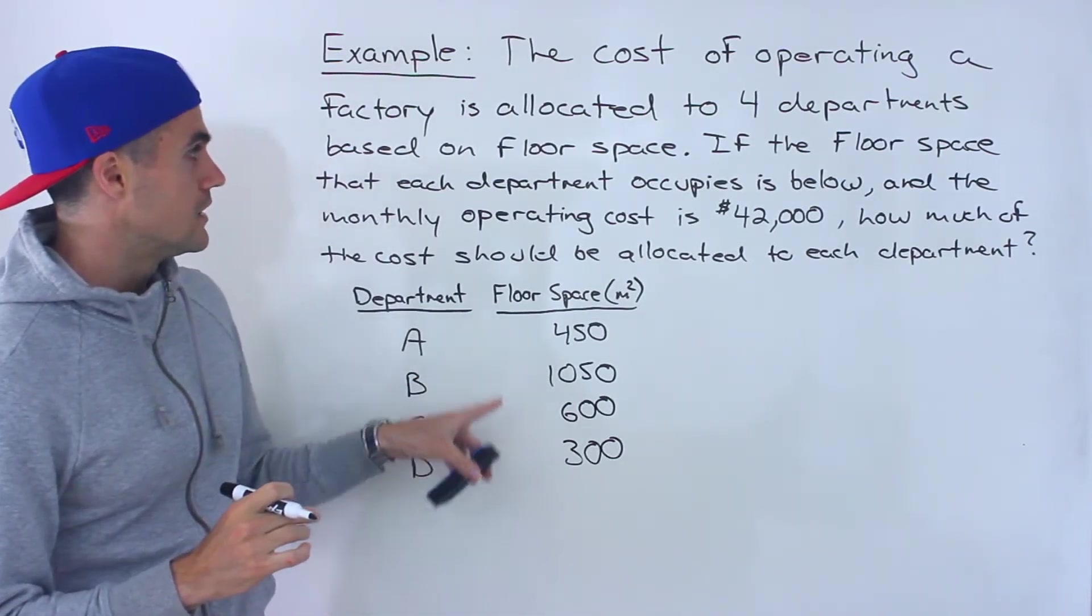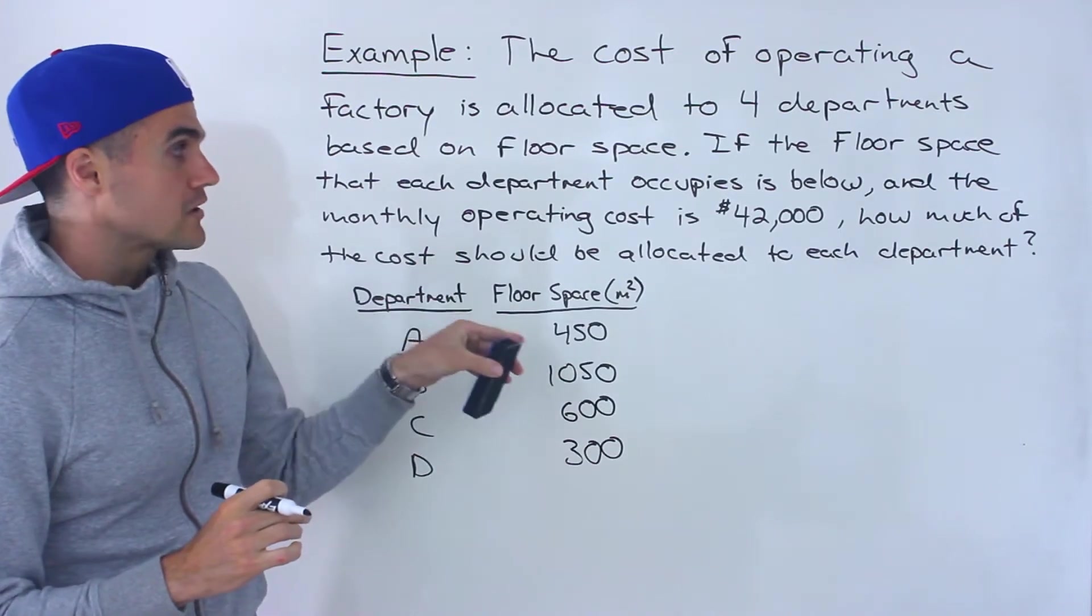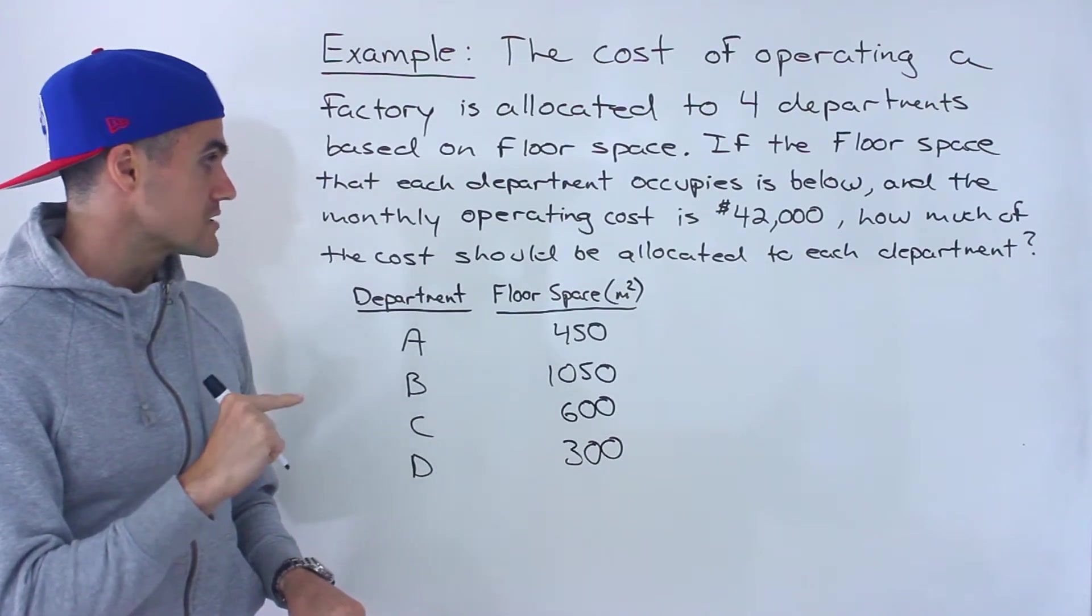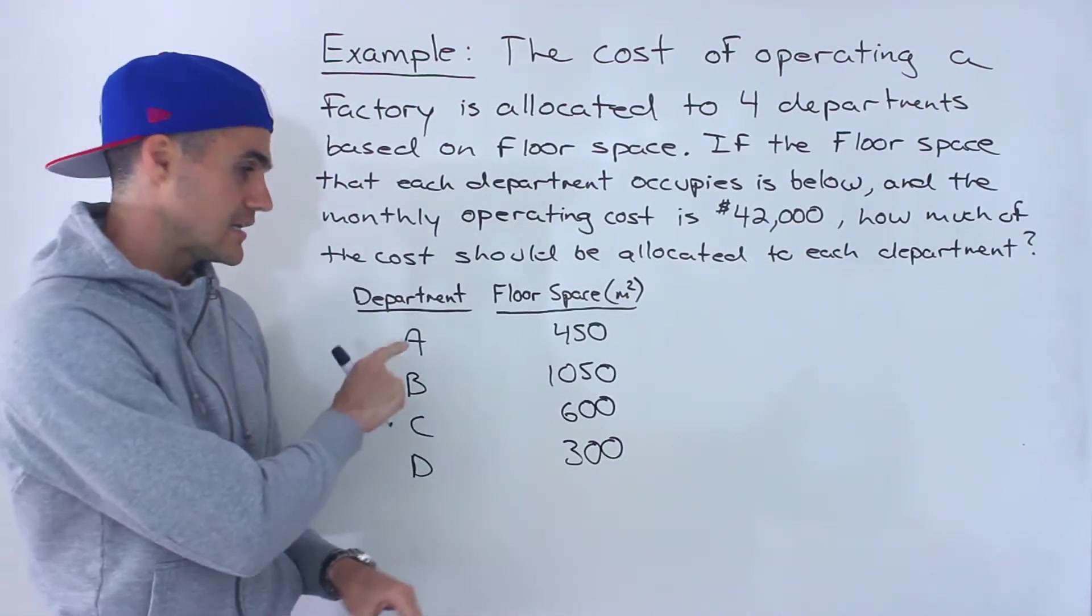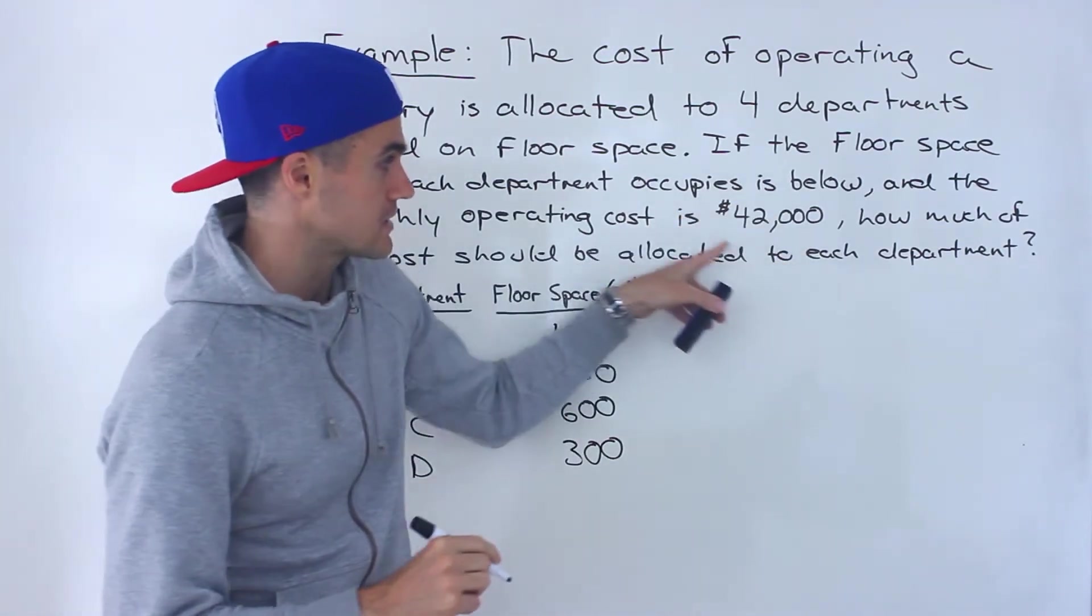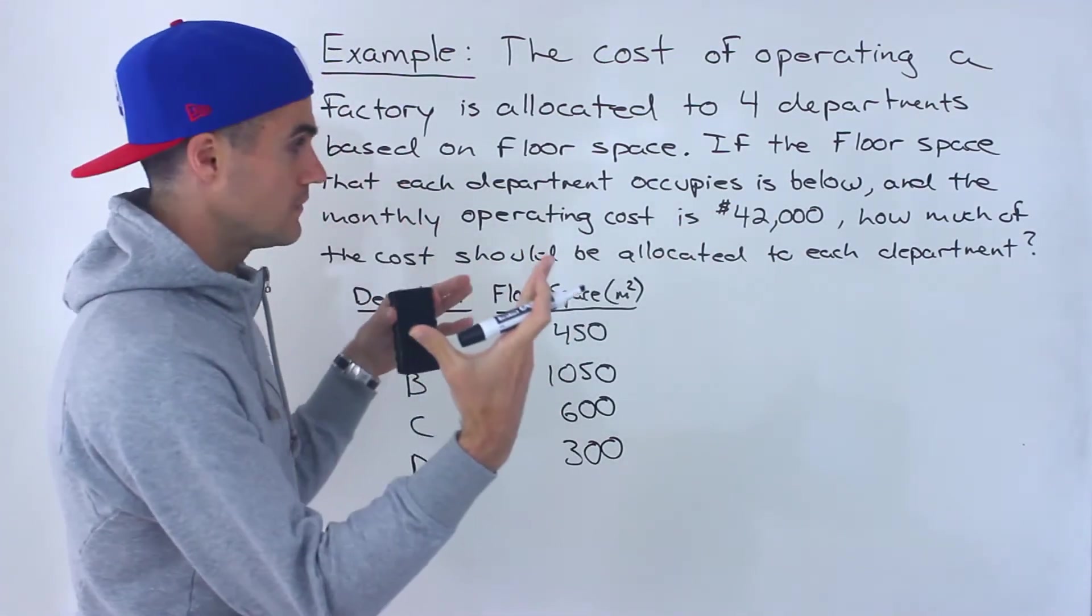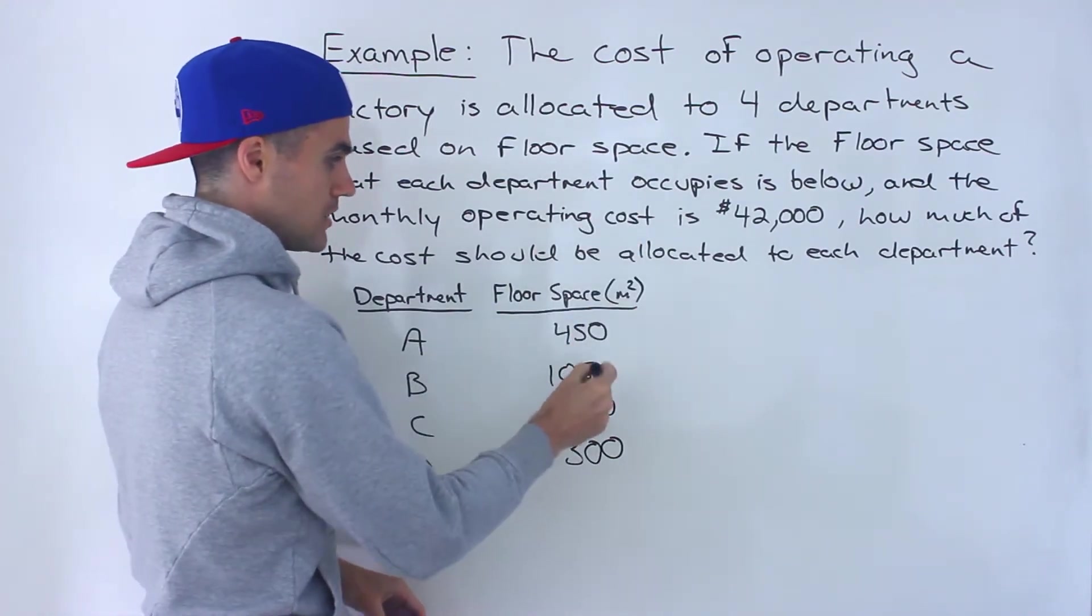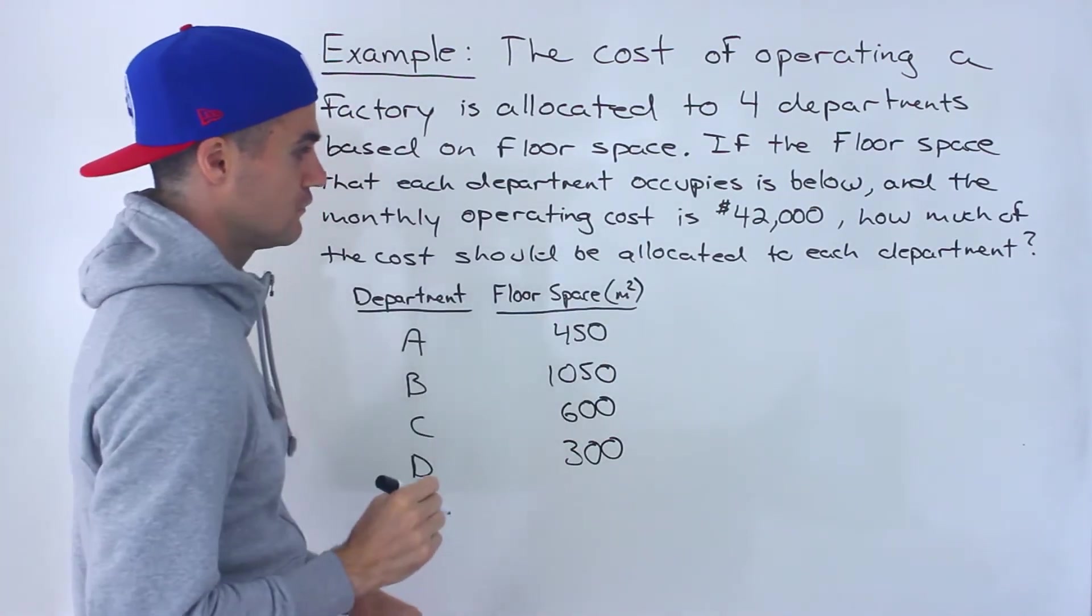And we're told the monthly operating cost is $42,000. How much of the cost should be allocated to each of the departments? So this $42,000 is for the whole factory and we're going to allocate that cost to each department based on the floor space.